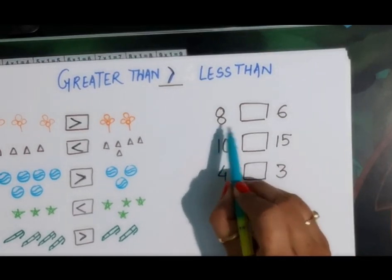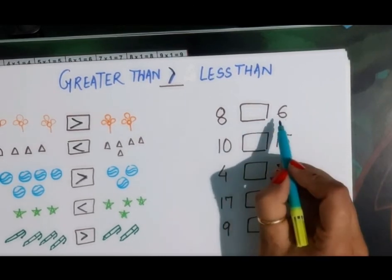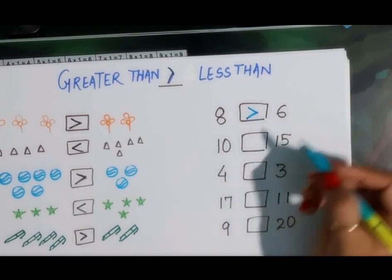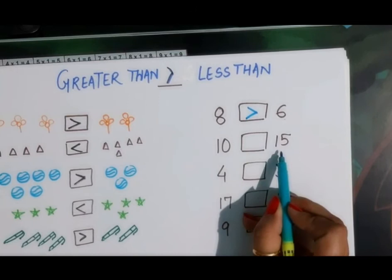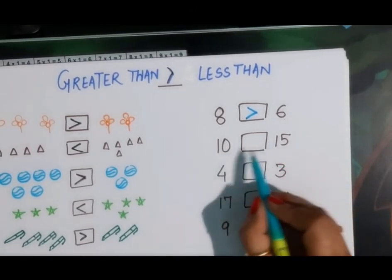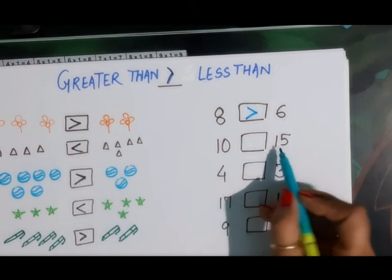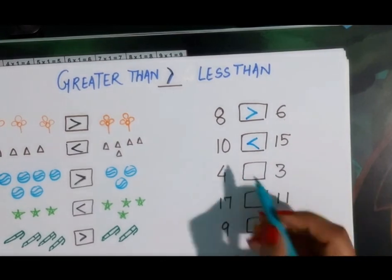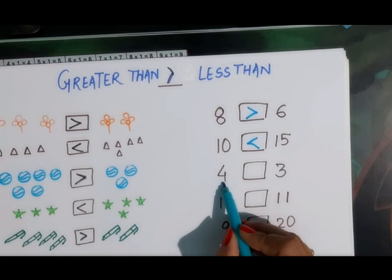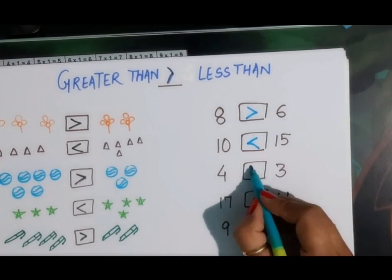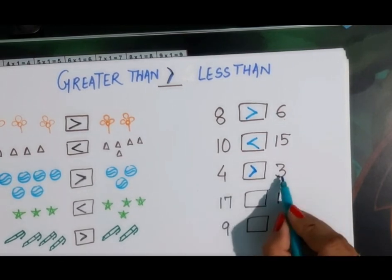Eight and six — which is greater? Eight is greater than six, so we use this sign. Next, ten and fifteen — ten is less than fifteen, so we use the less than sign. Next, four and three — four is bigger than three, so we use the greater than sign. Four is greater than three.